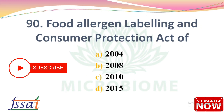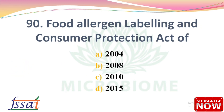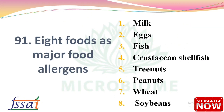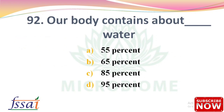Next: Food Allergen Labeling and Consumer Protection Act of — options: 2004, 2008, 2010, 2015. The right answer is option A, 2004. Next: Eight foods as major food allergens are: milk, eggs, fish, crustacean shellfish, tree nuts, peanuts, wheat, and soybeans.